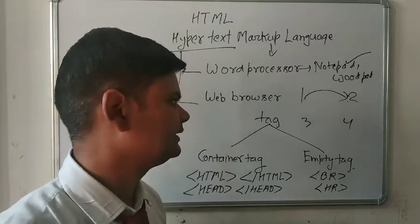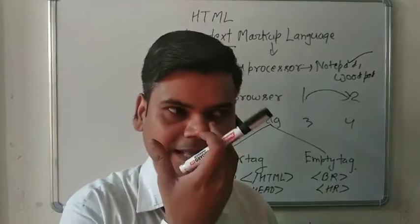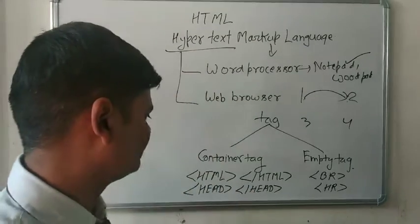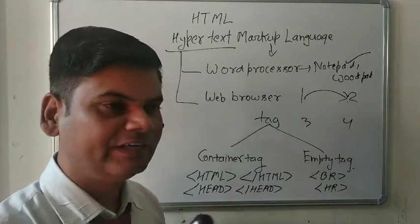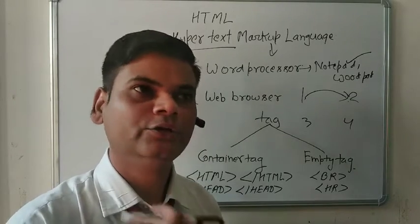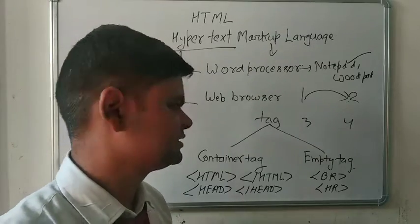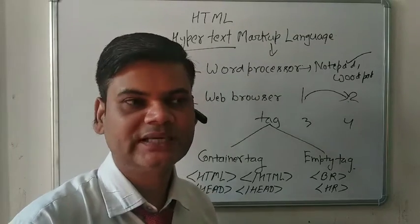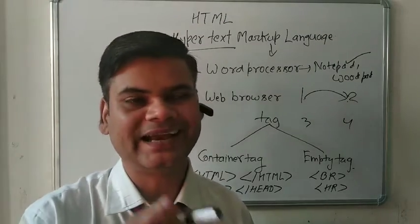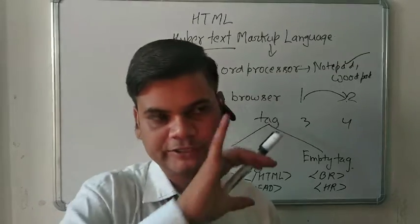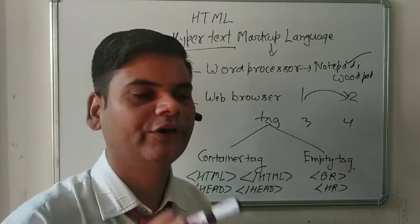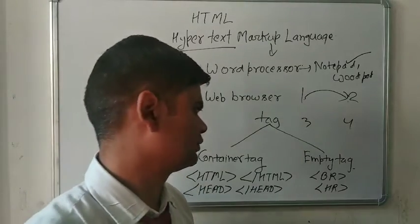Now the important thing regarding HTML is the tag. A tag is basically a keyword used for defining the formatting and displaying of pages. Every tag has a specific meaning and every tag is used for a specific purpose. For example, the HTML tag is used for showing the starting of an HTML program. The heading tag defines the heading of a page, and the title tag is used to define the title of a web page.